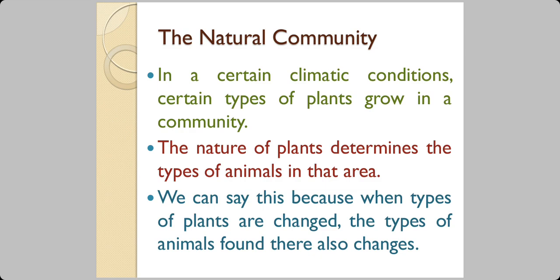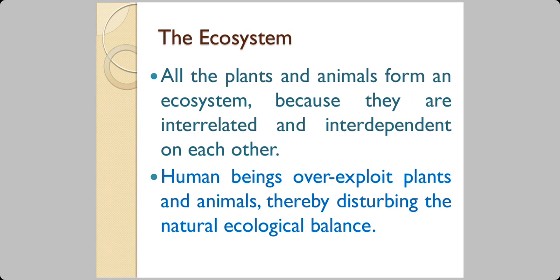In a certain climatic condition, certain types of plants grow in a community, and the nature of plant determines the type of animals in that area. When types of plants change, the types of animals found there also change. For example, the Asiatic lion, now found only in Gujarat, was once found all over the country — but their habitat was destroyed, the prey animals disappeared along with their plant food sources, and so the predators also went. All plants and animals form an ecosystem because they are interrelated and interdependent. When human beings overexploit plants and animals, we disturb the ecological balance.